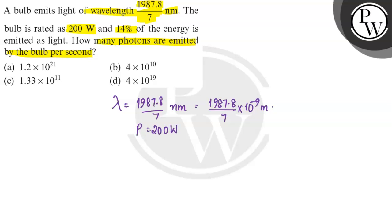The power is 200 watts. The energy emitted per second by the bulb is equal to 200 × 14/100, which equals 28 joules.